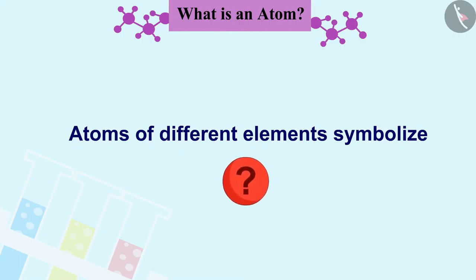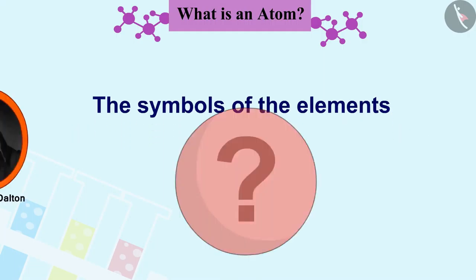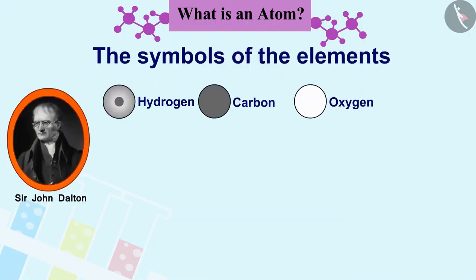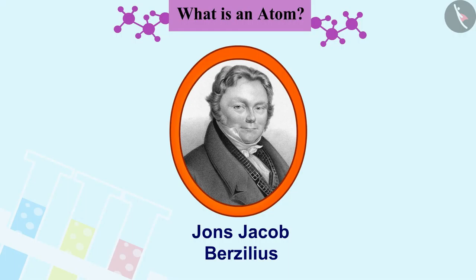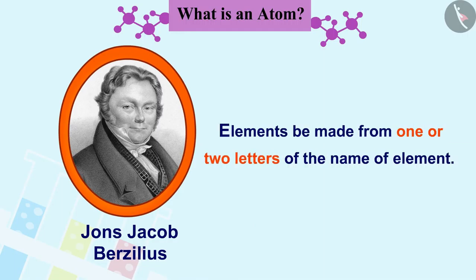Let us first see what the atoms of different elements symbolize. Dalton was the first scientist who used the symbols of the elements in a very specific sense. Berzilius suggested that the symbols of elements be made from one or two letters of the name of the element.